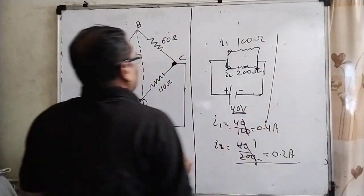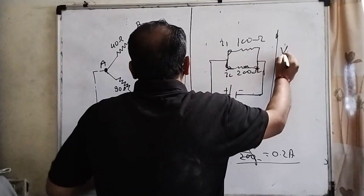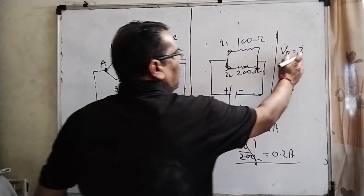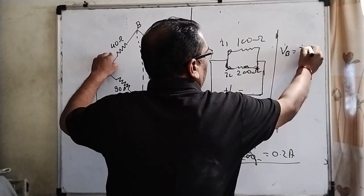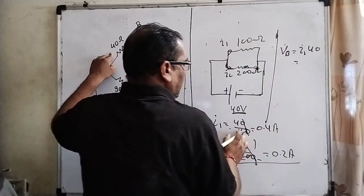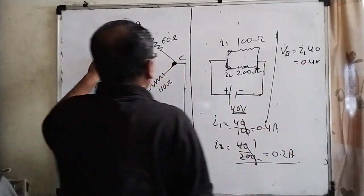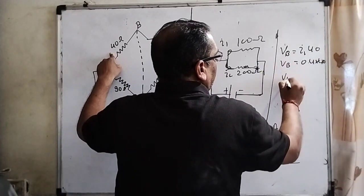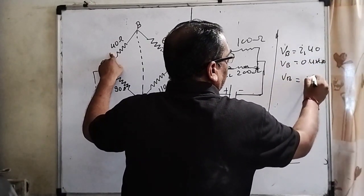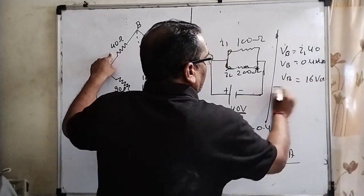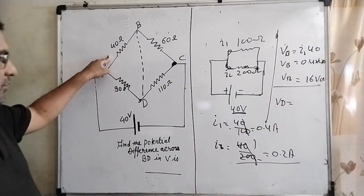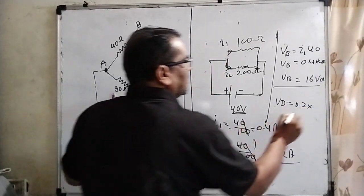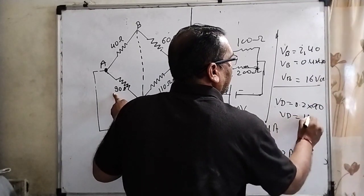So what is the potential at B? V equals I times R. What is I? I1 into this R means 40. What is I? 0.4 into resistance is 40, means VB equals 16 volts. And VD—what amount of current will flow here? 0.2, and what is the resistance? 90. Then VD equals 18 volts.